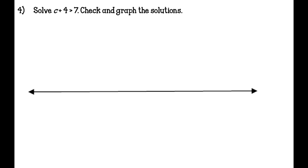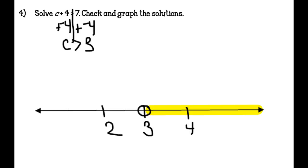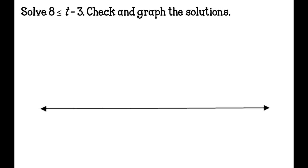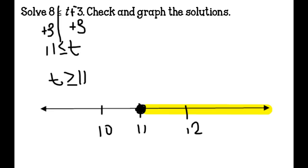Go ahead and hit pause and try this on your own. Hopefully you got C is greater than 3, and this is what your graph should look like. Hit pause and try the next one on your own, then hit play when you have your answer. We solve for T and get T is greater than or equal to 11. Remember to use the switch it, flip it rule on this one. This is what your graph should look like.